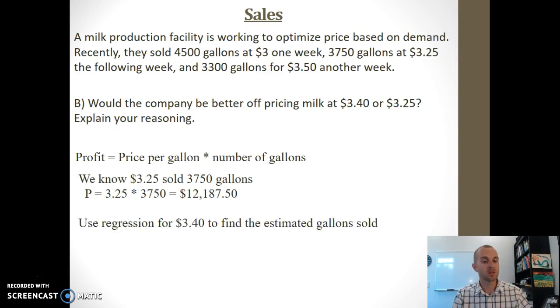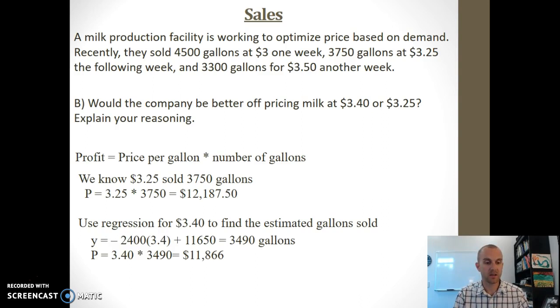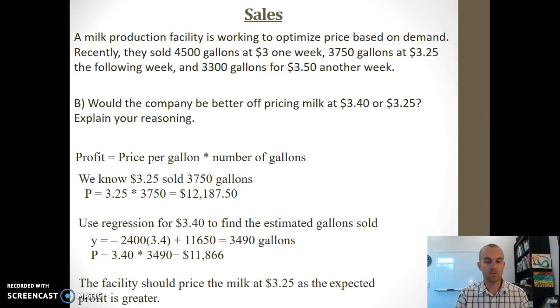Now I need to figure out how many gallons I'd sell at $3.40. I use the regression line to calculate the number of gallons: y = -2,400(3.4) + 11,650 ≈ 3,490 gallons. My profit would be $3.40 times 3,490, which gives $11,866. Based on this model, I'm better off selling milk at $3.25 than at $3.40.